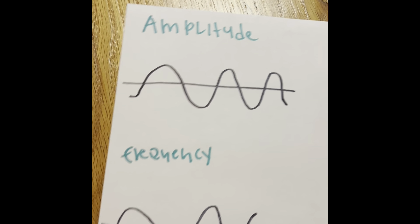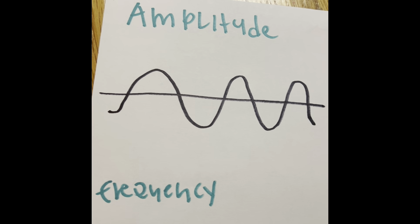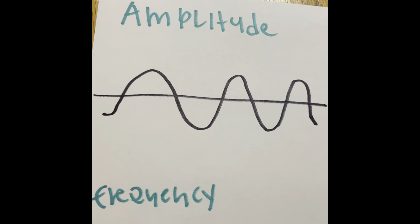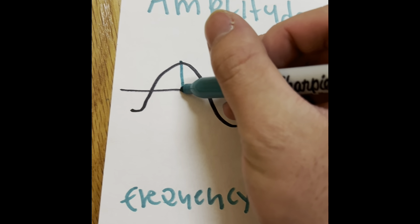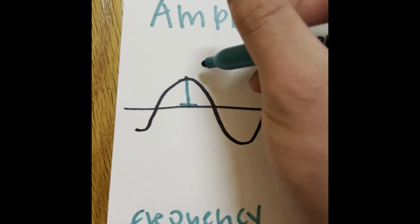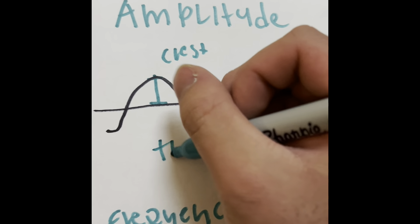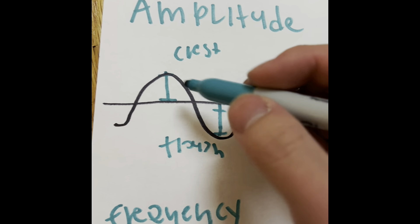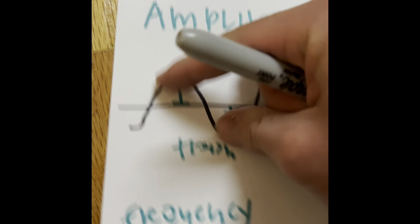Let's look at the amplitude. The amplitude is how powerful the wave is — it could be sound waves or light waves. You can measure it by measuring from the center line to the bottom. This top is called the crest, and right over here is called the trough. When you measure the amplitude, you go from the horizontal line up to the bump of a wave.